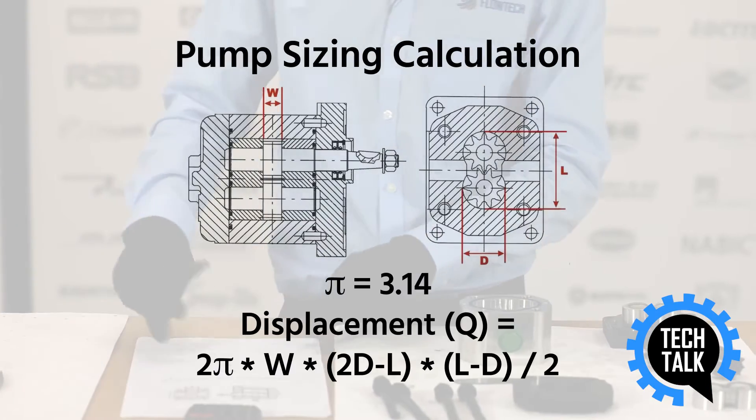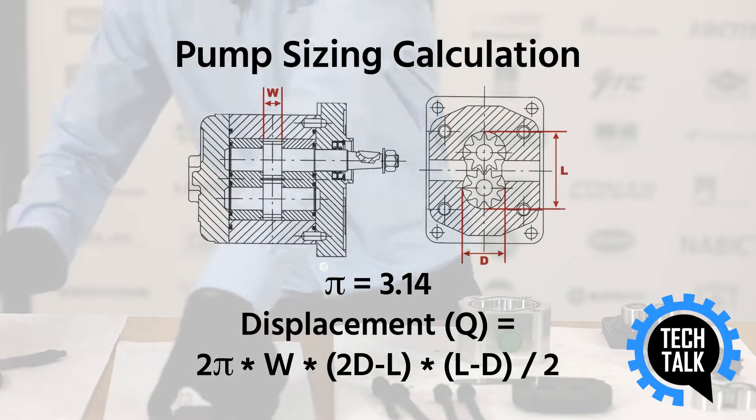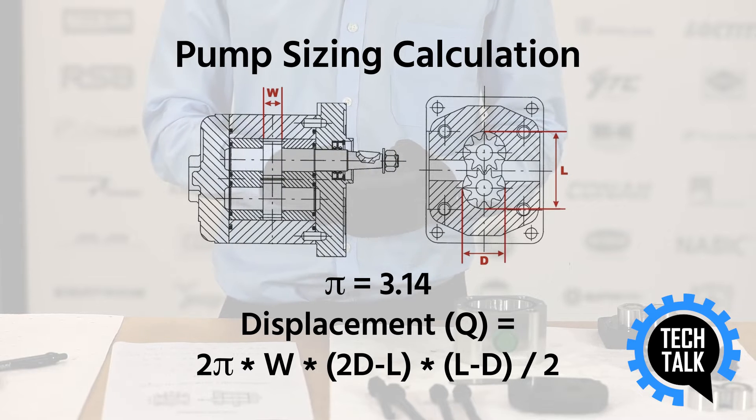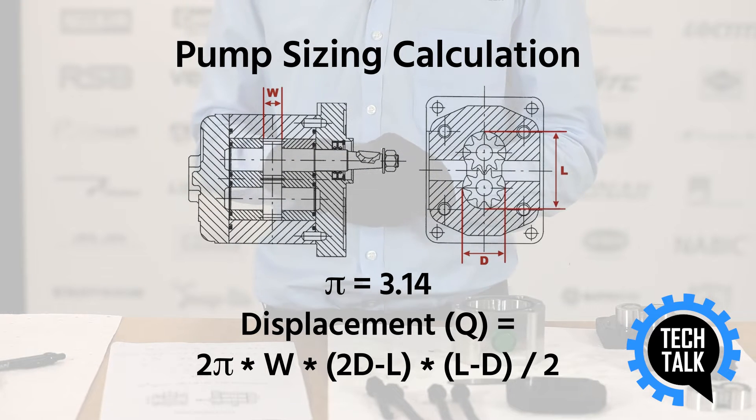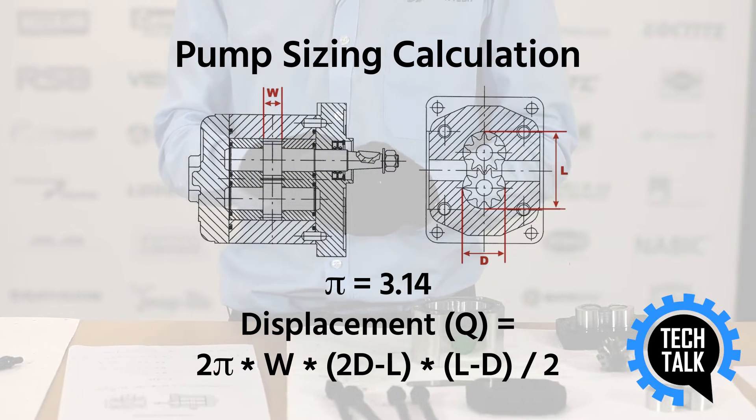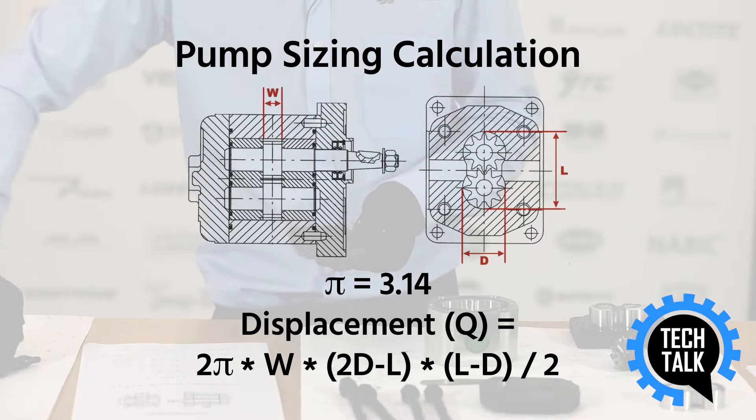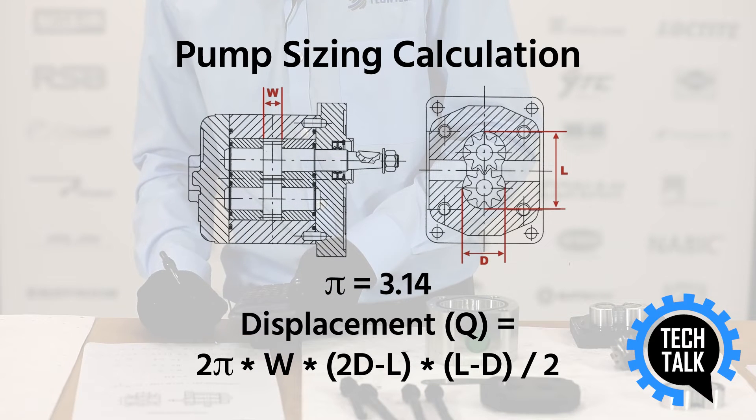Okay, so if we plug these four numbers into the calculator, so if we have 6.28 multiplied by 2, multiplied by 0.6, multiplied by 1.55, that gives us 11.68 cc.